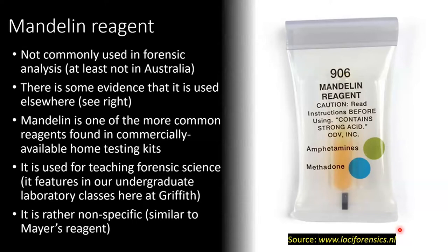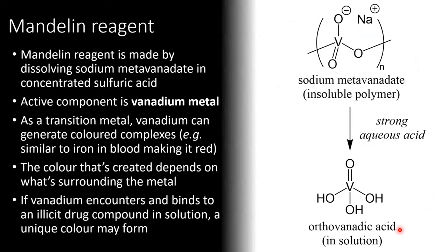As a test it's rather non-specific, very similar to Mayer's reagent that we talked about earlier. You make it by dissolving sodium metavanidate in concentrated sulfuric acid. Sodium metavanidate is an insoluble coordination polymer, so to get it into solution we add it to a strong aqueous acid — sulfuric acid — which breaks those bonds and liberates units of orthovanadate acid, which is soluble in solution. This gives you a yellow solution, and that's what we use for our presumptive test.